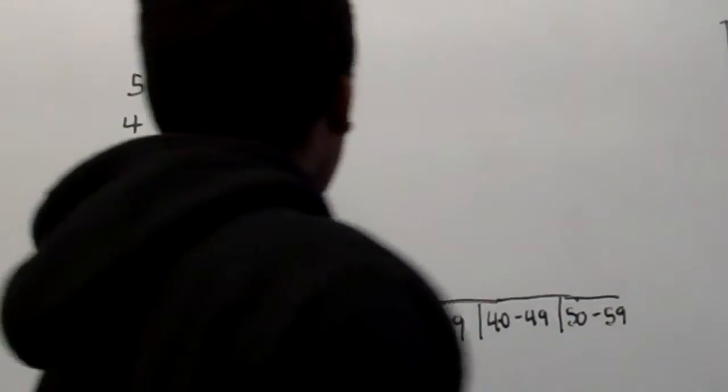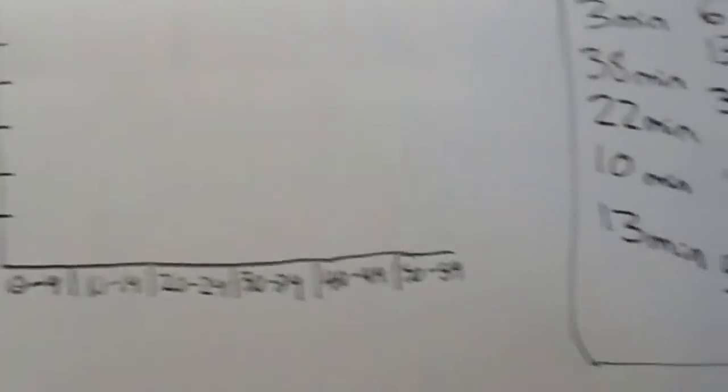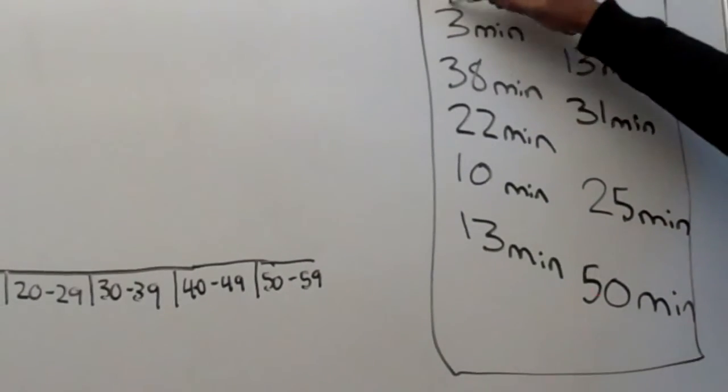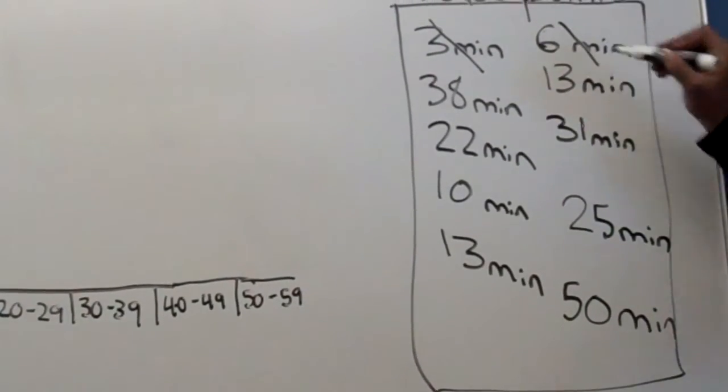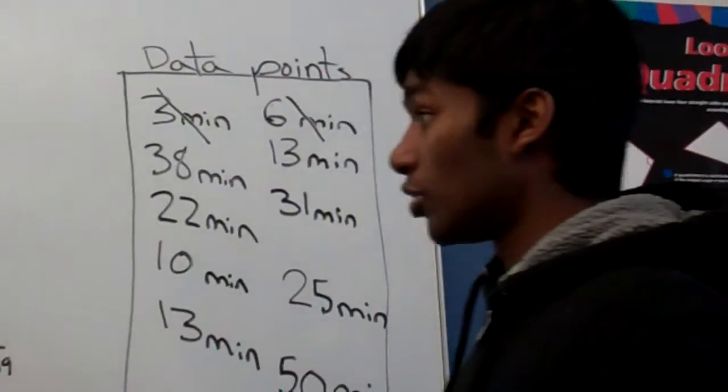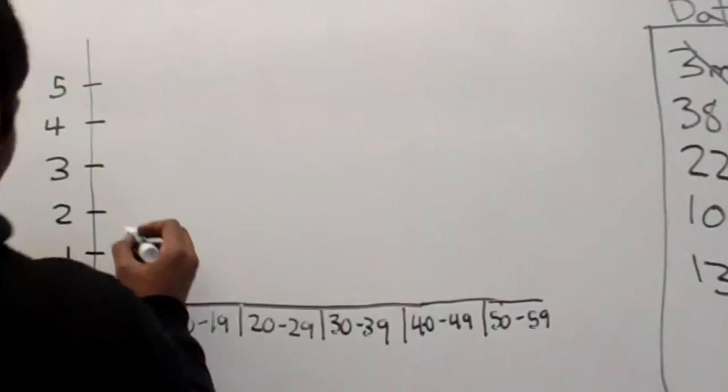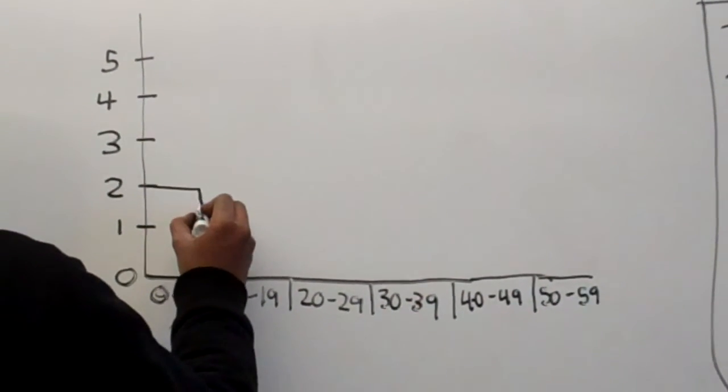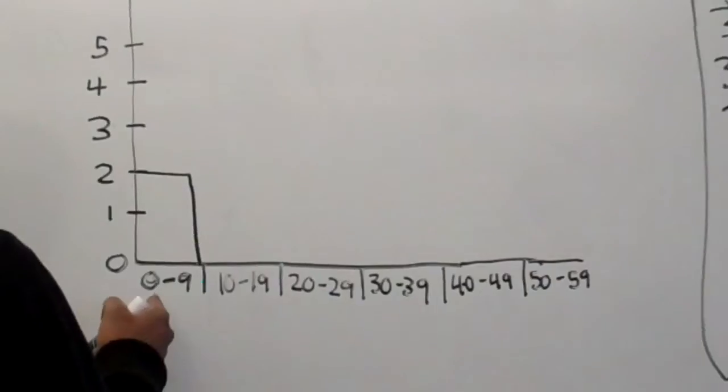Okay. So under the first category there are two people, the three minutes person and the six minutes person. So that's two people total. So we go up to here and fill this category up to two.